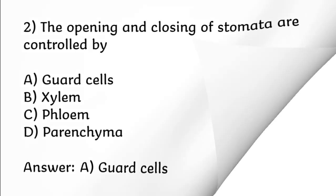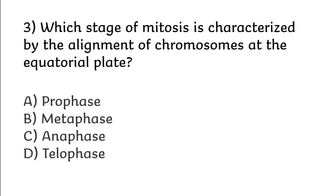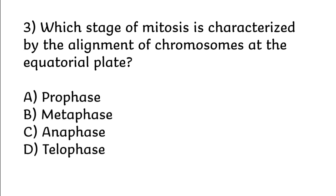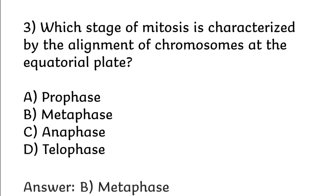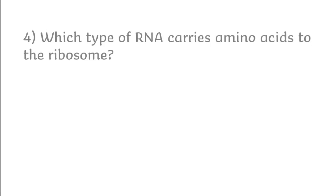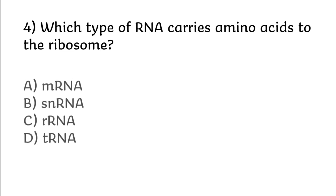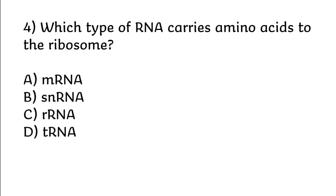Which stage of mitosis is characterized by the alignment of chromosomes at the equatorial plate? Options: prophase, metaphase, anaphase, telophase. Correct answer is option B: metaphase. Which type of RNA carries amino acids to the ribosome? Options: mRNA, snRNA, rRNA, tRNA. Correct answer is option D: tRNA.